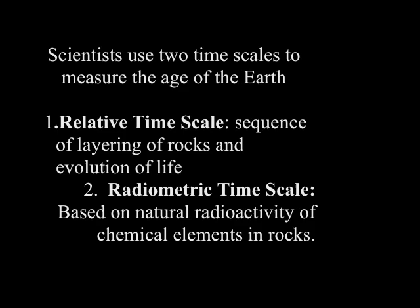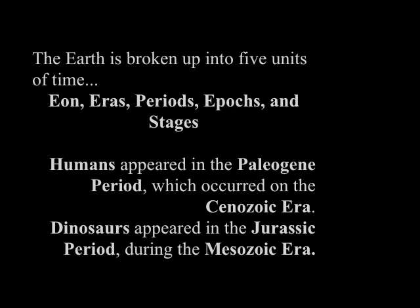The Earth is broken up into five units of time: eons, eras, periods, epochs, and stages.